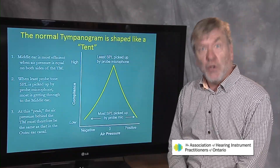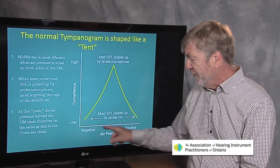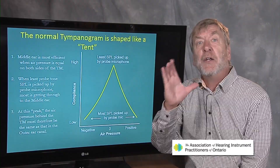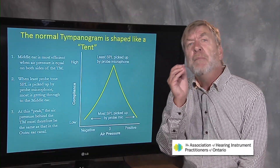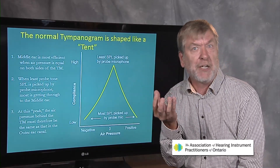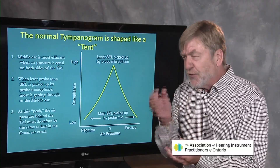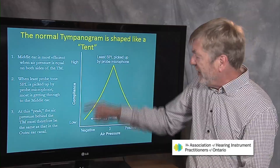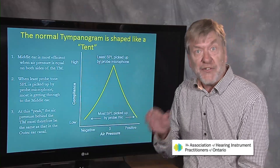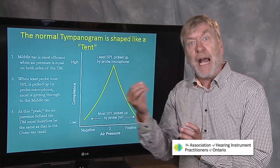Here's what the tympanogram looks like — kind of like a pup tent. The horizontal axis shows negative to positive air pressure, while the vertical axis shows middle ear compliance. Remember, the middle ear is a stiffness-dominated system. There's very little mass in the middle ear; the ossicles are the smallest bones in the body. The middle ear is quite a stiff system, so we're trying to find out at what air pressure the middle ear is most and least stiff, as indicated by the amount of sound bouncing back off the drum.